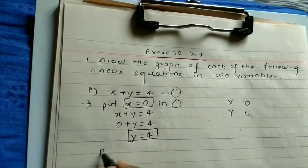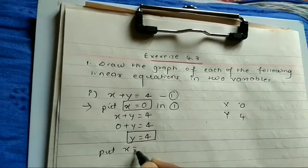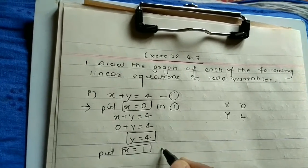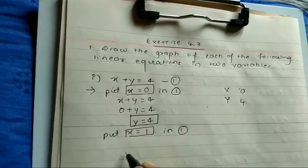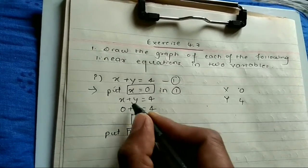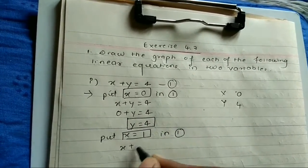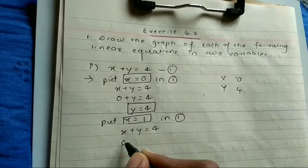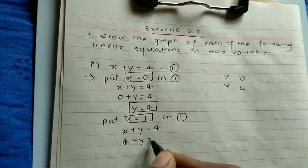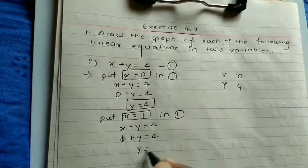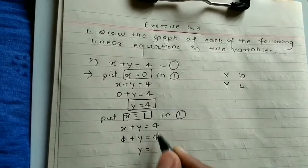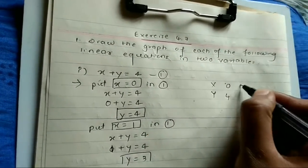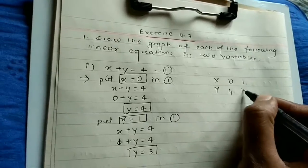Next, put X equals 1 in the given equation X plus Y equals 4: that gives 1 plus Y equals 4, so Y equals 4 minus 1, which is 3. When X is 1, Y is 3.